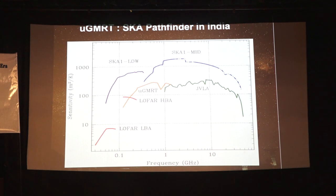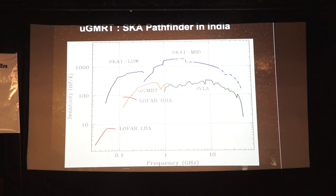In terms of sensitivity in units of m²/K, SKA-1-Mid is the highest, SKA-1-Low is next, and here you can also see the upgraded GMRT. A key point: until SKA-1 comes up, which is another roughly eight years from now, GMRT remains the best instrument in the world operating in this frequency range — below 1 GHz, down to around 300 MHz. So use it and use it well.